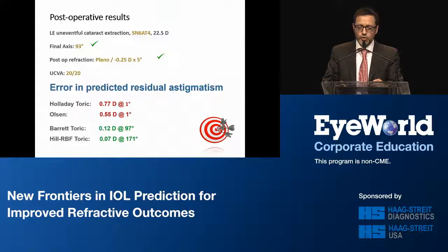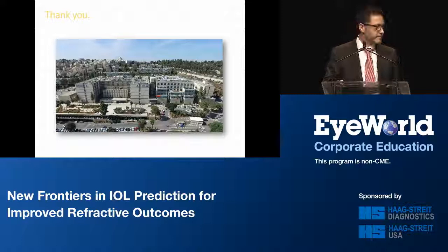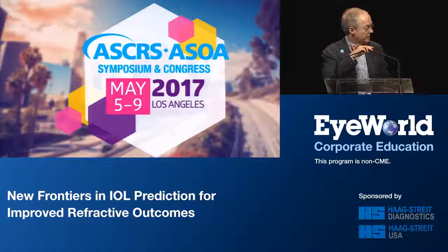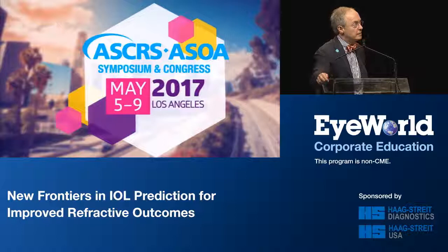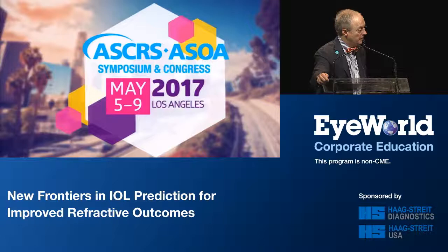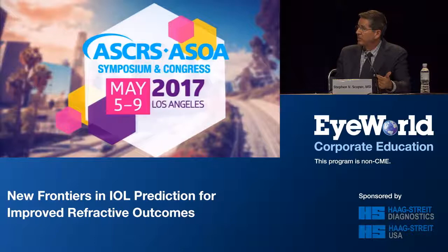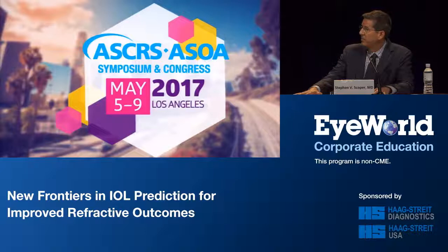We have a little time for questions. In your practice, Steve, how many devices do you measure with when measuring someone? Our routine is all measurements are done before the patient sees the doctor. I use the LENSTAR, an OPD, and a Cassini as well to look at posterior corneal astigmatism — so I look at three. If there's any discrepancy, sometimes I'll send them back for other testing, but those are the three basic things that go for every patient before they see me.